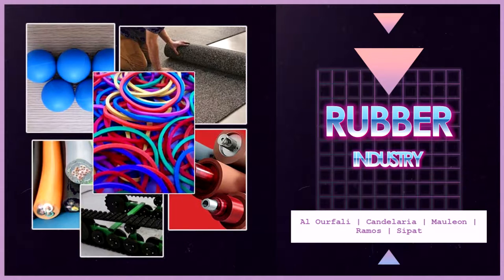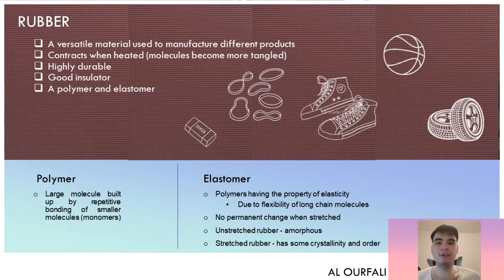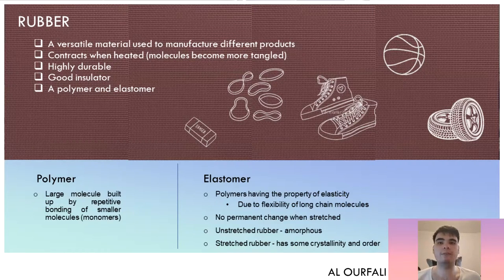Hello everyone, this is Group 2. We will be discussing rubber. Rubber is a versatile material used to manufacture different products. It contracts when needed, its molecules become more intact, it is highly durable, a good insulator, a polymer, and an elastomer.